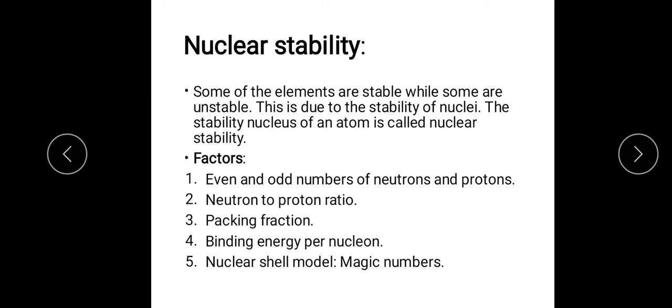Most of the elements present in this universe are unstable, and only a very small number are stable. Now if we look at the stability of any atom, we look at it on the basis of its nucleus. If the nucleus is stable, it means the whole atom is stable. And if the nucleus is unstable, then the atom is unstable — because stability or instability is determined on the basis of the nucleus.